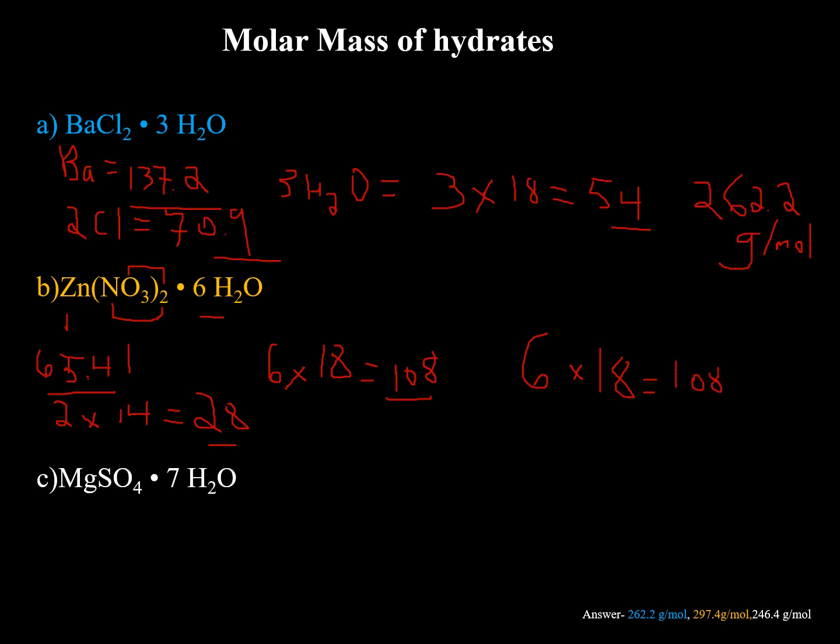I see we have a mistake here. Because if we look here, there are six oxygens. However, the molar mass of oxygen is not 18. It's 16. So six times 16 would be 96. So when we add these four numbers up, 65.41 plus 28 plus 96 plus 108, hopefully we get this 297.4. And the unit again is grams per mole.